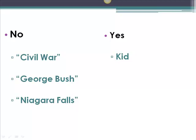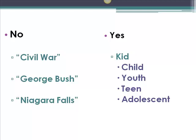Look at the keyword on the right: kid. This might be how we would search Google, and we would definitely find plenty of results. But when we are looking for books or articles, we need to consider how the author of a book or an article would write. What words would they use? A scholarly article author likely would not use the word kid, but he or she would likely use synonyms like child, youth, teen, or adolescent.